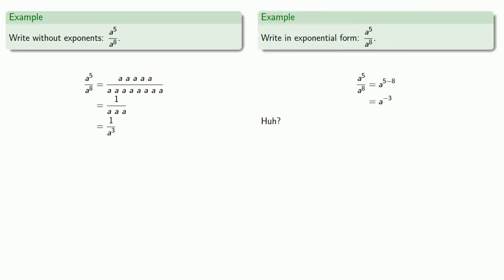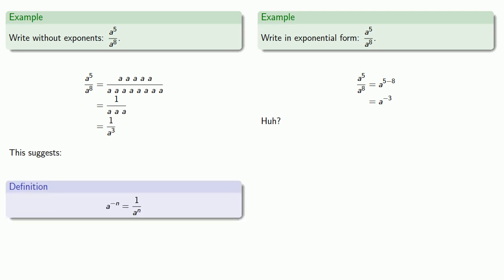If we go back to the problem we started with, we found that on the one hand, a to power five over a to power eight looks like it should be a to power negative three. On the other hand, when we did this without exponents, we found that it actually equals one over a to the third. There's no reason why a to power negative three has to mean anything, but this work suggests that we could interpret a to power minus n as one over a to power n.